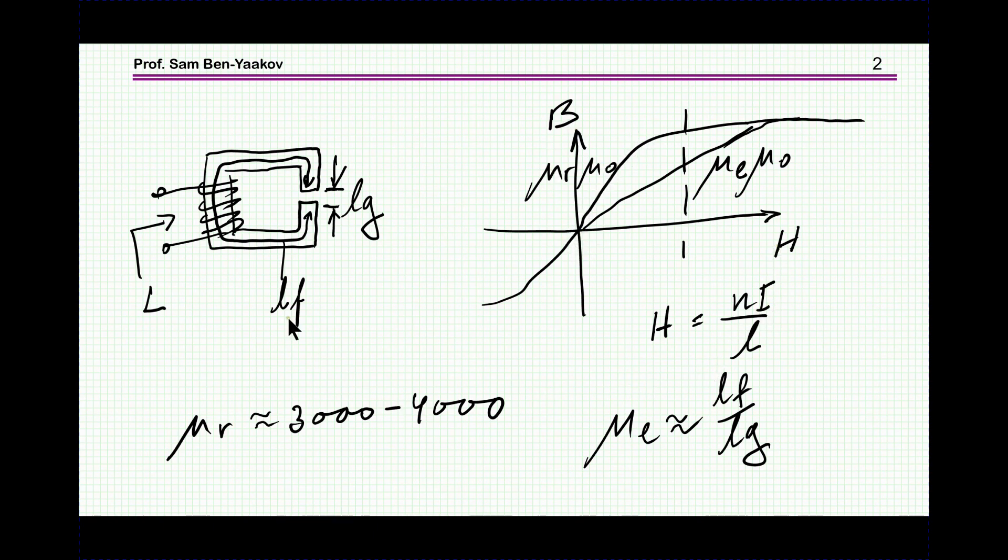Consequently, the total permeability is high and therefore there is a steep rise here in the BH curve. If we need to store some energy, that is some current in the winding, therefore building up a magnetic field according to this relationship, then pretty soon with a high permeability we are going to hit saturation, which is not a good point to work at.